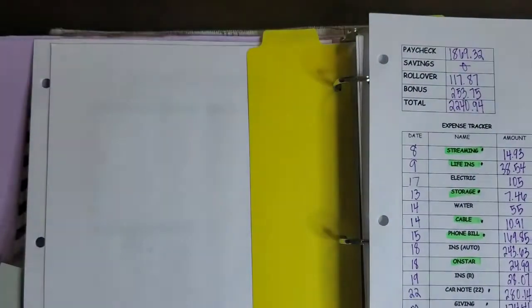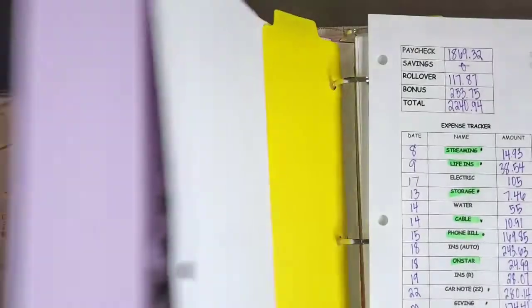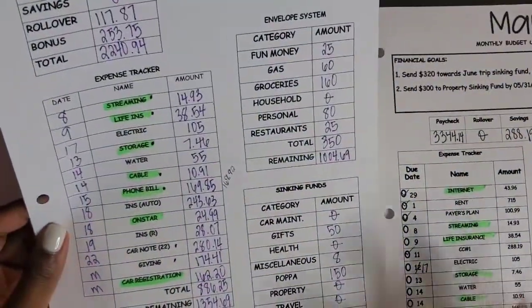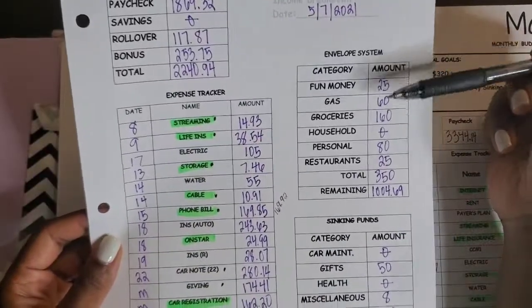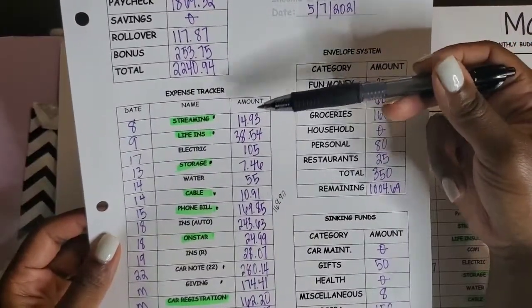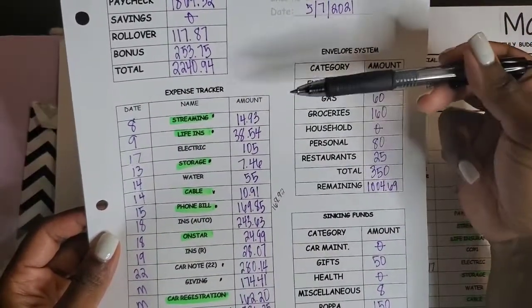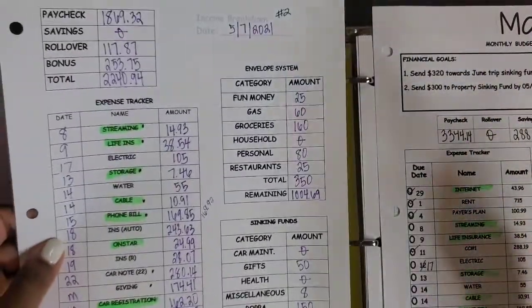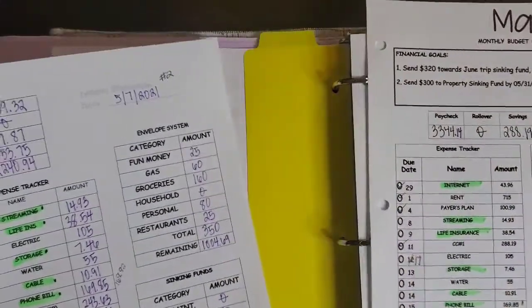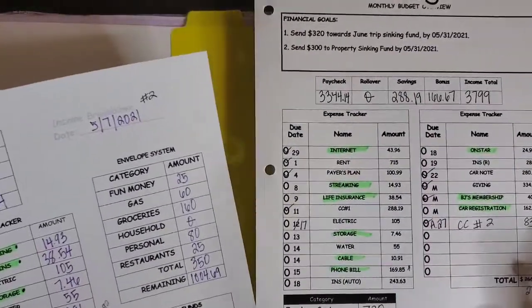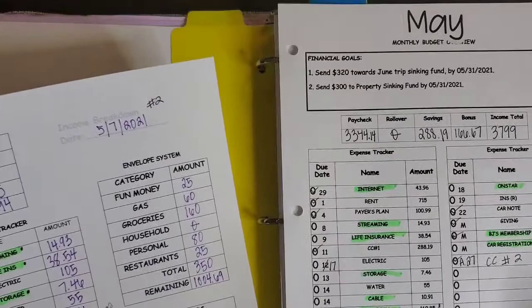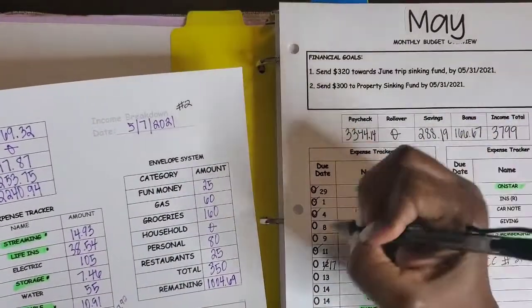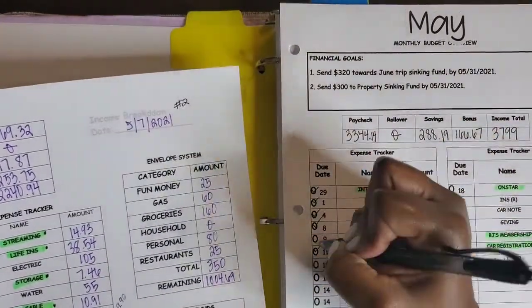As well as I am going to give an update. So first and foremost, we always turn to our monthly budget overview sheet. I'm going to actually slide this out because I need this sheet to actually go over everything, which is the income breakdown number two.